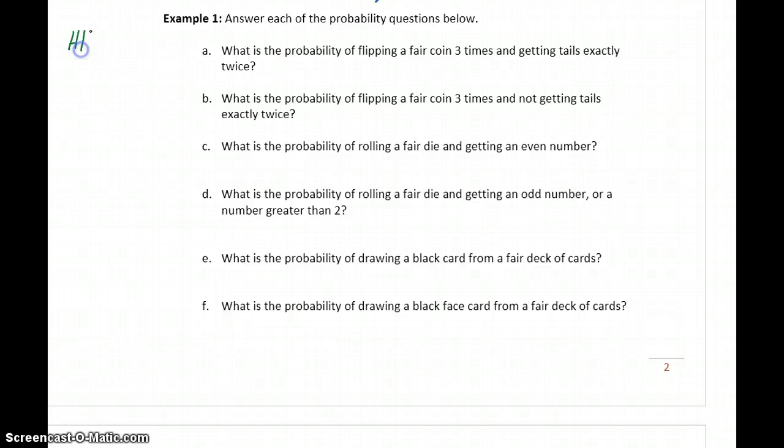So for instance, on the first flip we could get heads, on the second flip we could get heads, and on the third flip we could get heads. So that's one possible outcome. Or we could get heads, heads, tails. We could get heads, tails, heads, tails, heads, and then heads. So those are our different possible outcomes for flipping a coin three times.